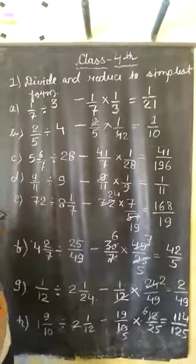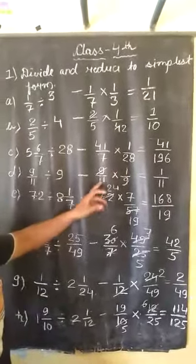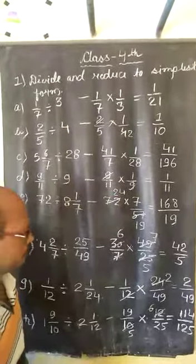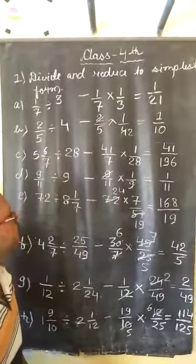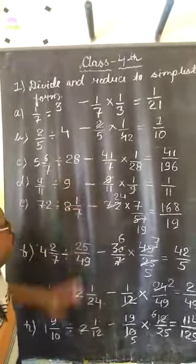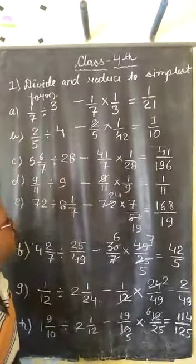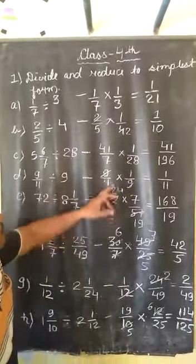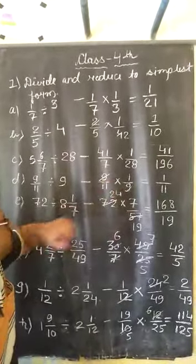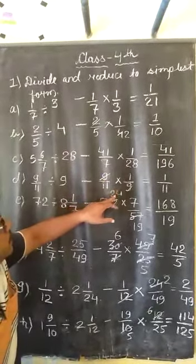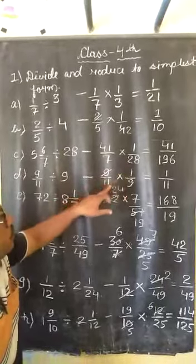9 upon 11 divided by 9. Here 9 upon 11, we change the sign into multiplication and it will be reciprocal of 1 upon 9. Then we minimize the numbers, 9 upon 9 cancels, and the rest digit multiplication, 1 upon 11 times 1 is 1 upon 11, our answer.